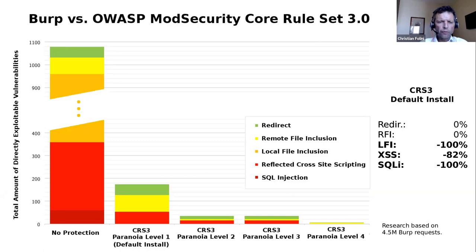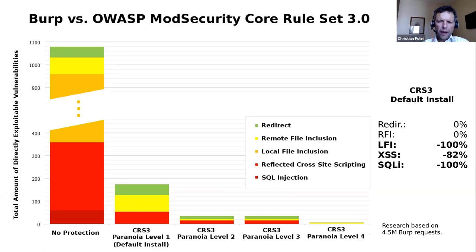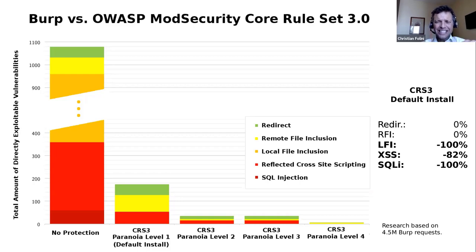In the end this boils down to roughly 40 root causes of weaknesses — that is the first column. The second column is the default installation of CRS 3.0, the five-minute installation — just apt-get install and off you go — and that brings you roughly 80–90% of weaknesses gone. SQL injections are no longer exploitable for Burp, local file inclusion and remote command executions are mostly gone. A really smart attacker is still able to pull off a SQL injection, but Burp — an automated scanner — is no longer able to do it.